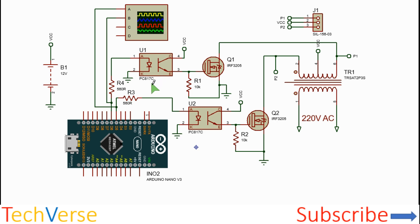817C. They are very common optocouplers. And you need two power MOSFETs. You can use the IRFZ44, but I prefer using the IRFZ205 since they can handle more than twice the current. You also need a transformer with a center tap primary and some connectors. All the connections are shown.